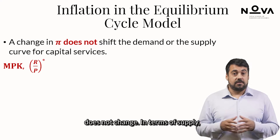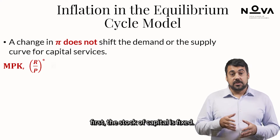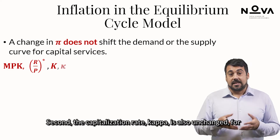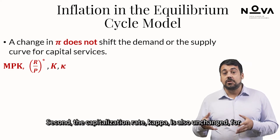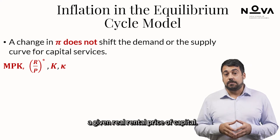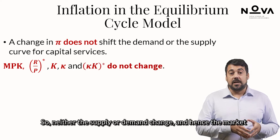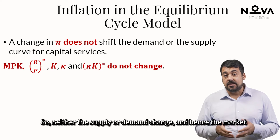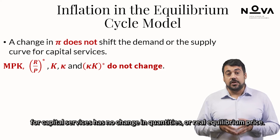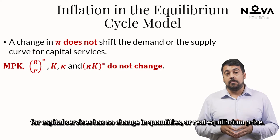In terms of supply: first, the stock of capital is fixed. Second, the capital utilization rate, kappa, is also unchanged for a given real rental price of capital. So neither the supply nor demand change, and hence the market for capital services has no change in quantities or real equilibrium price.